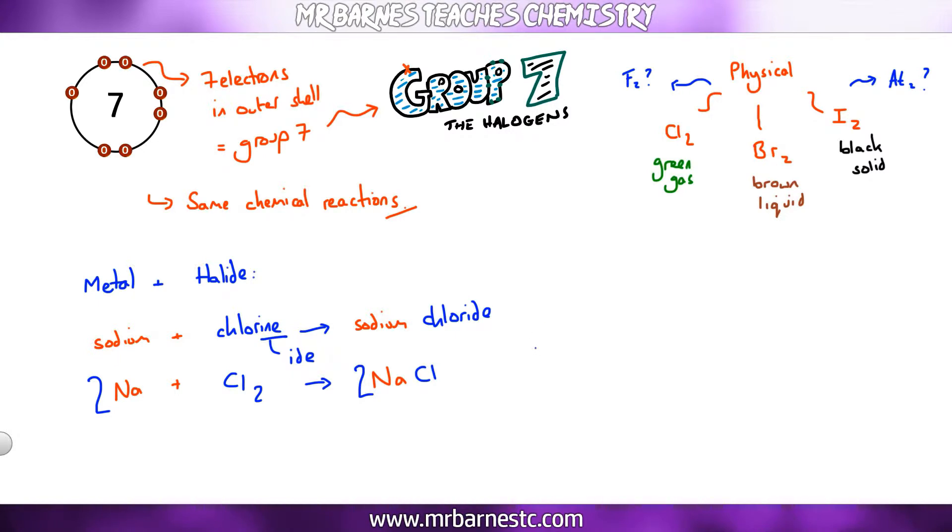This is the same for any metal. So if I have lithium and chlorine it would make lithium chloride. Sodium and bromine it would make sodium bromide. The trend continues regardless of what metal and what halide you have.